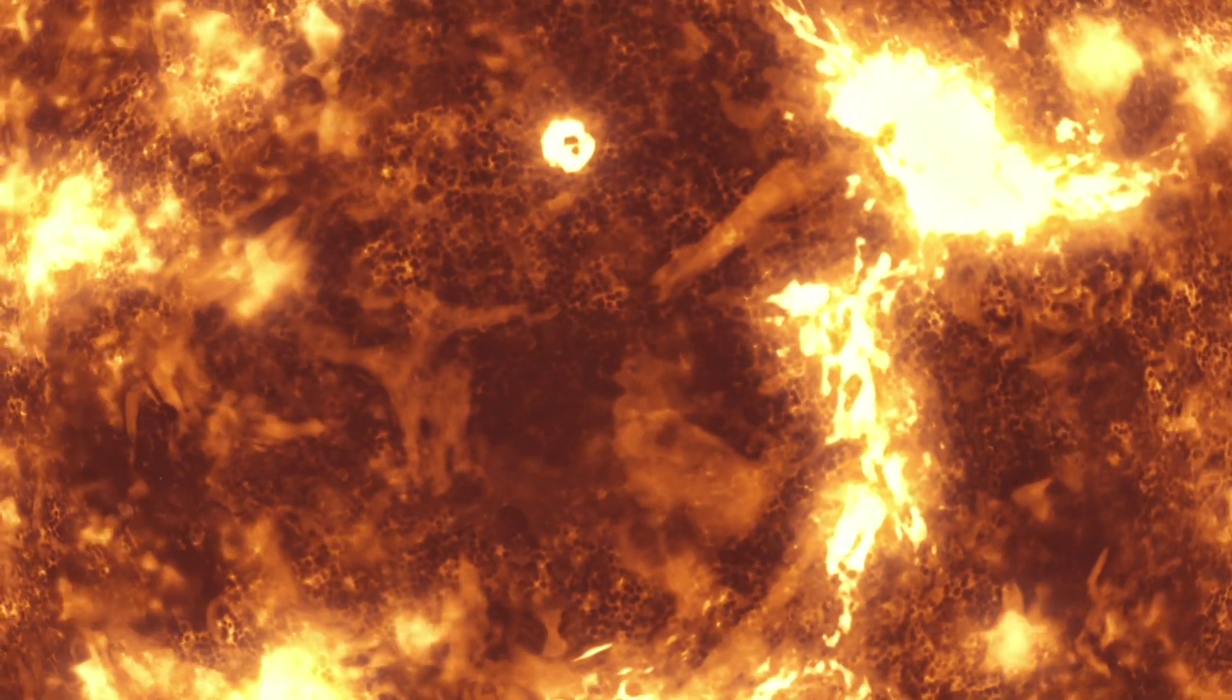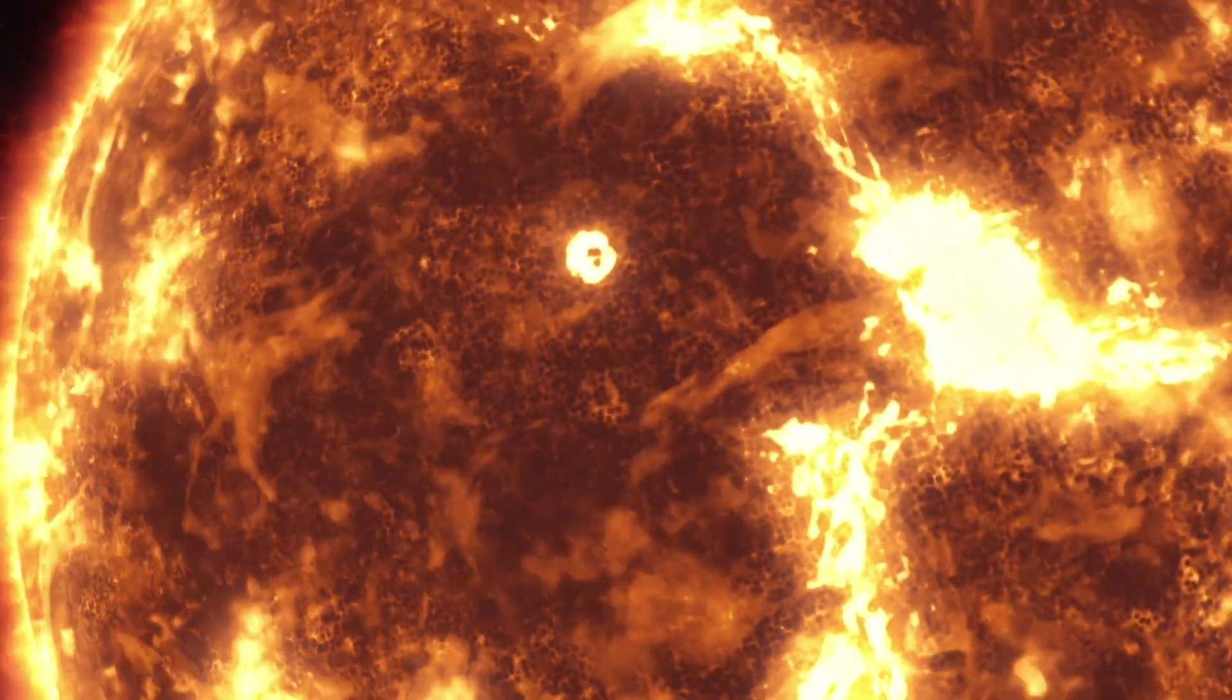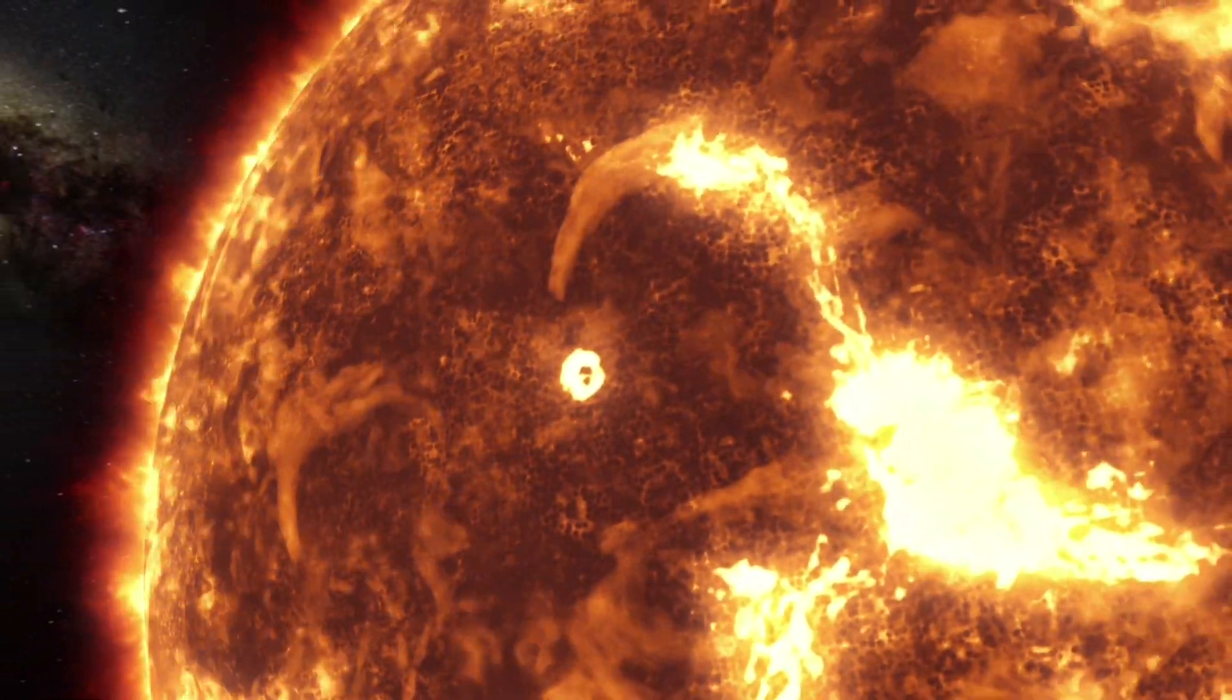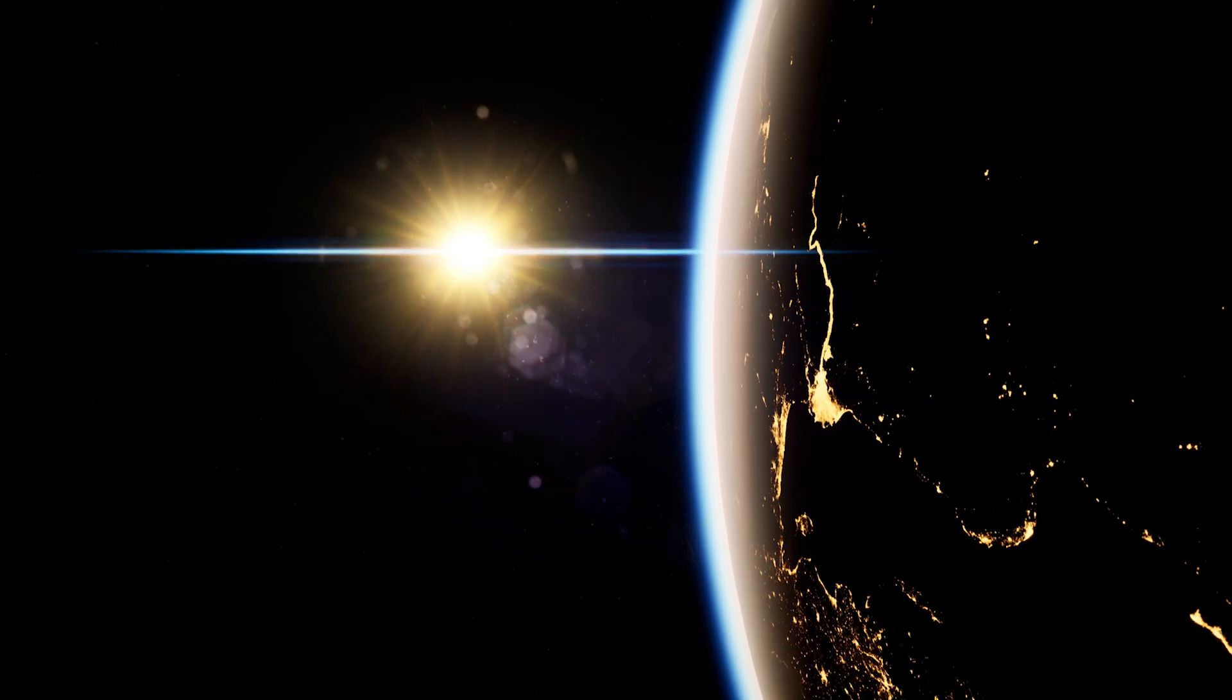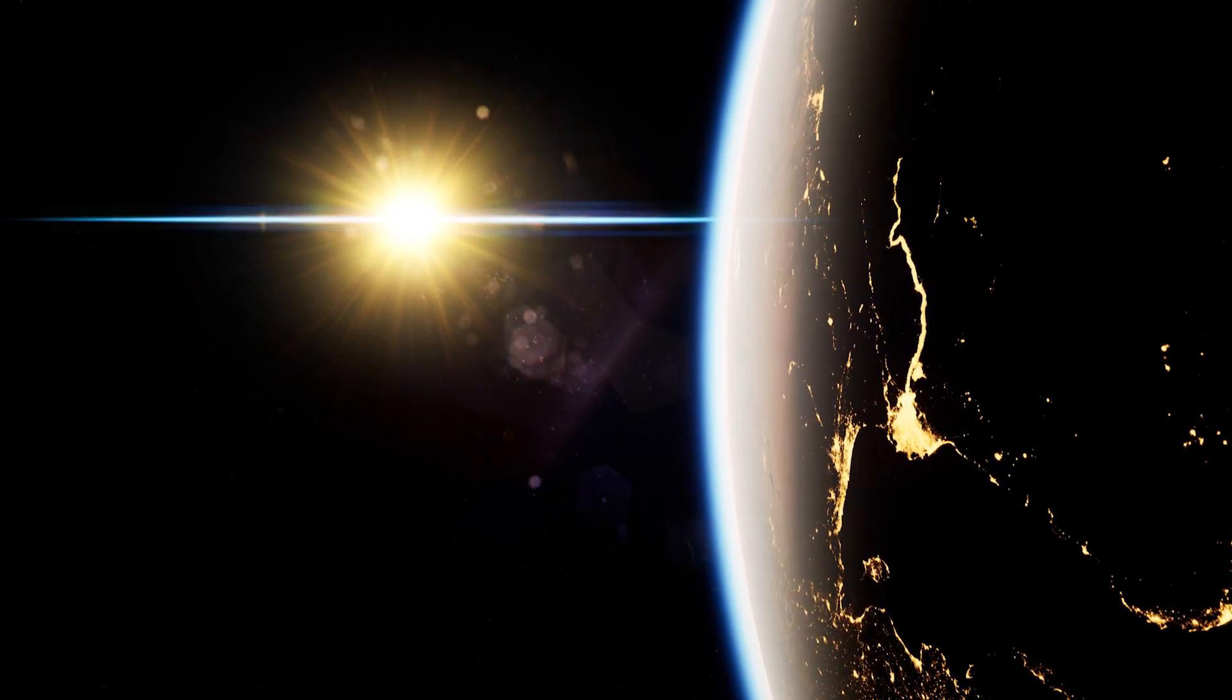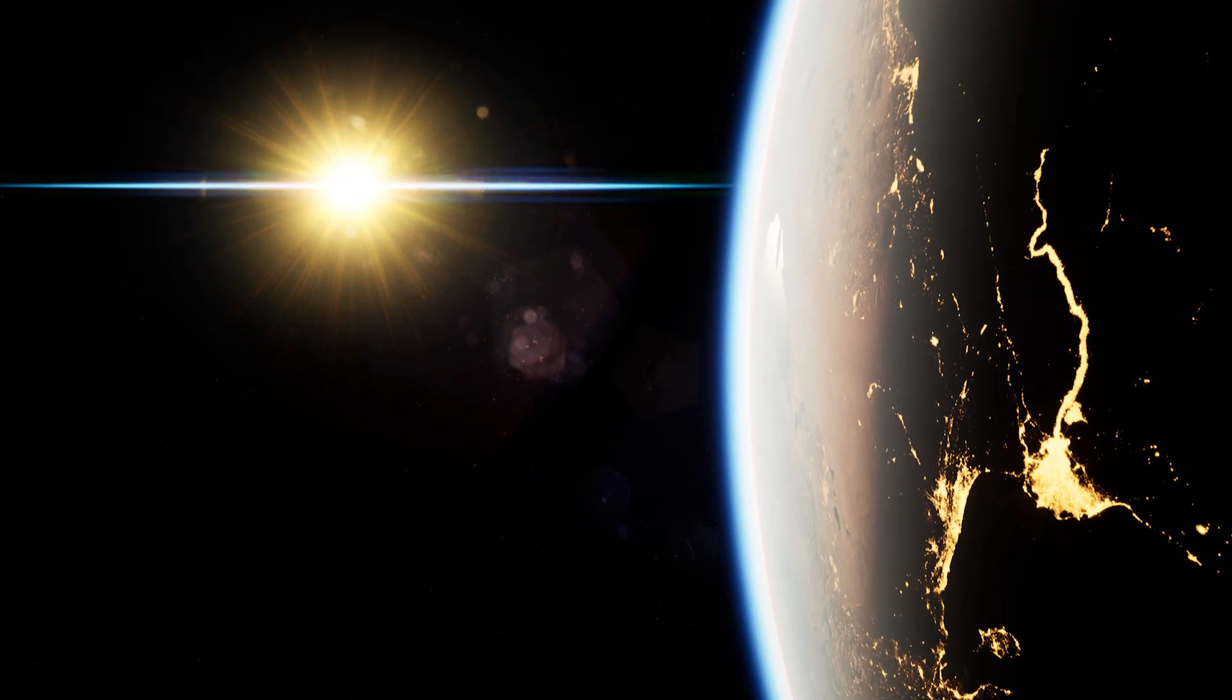A coronal mass ejection, or CME, is a huge entangled mess of plasma and magnetic field that routinely erupts from the surface of the sun. Essentially, part of the solar atmosphere becomes unstable and begins accelerating at hundreds to thousands of kilometers per second. CMEs routinely impact the Earth and can do significant damage to satellites and affect power grids or even pipelines on the surface of the Earth.